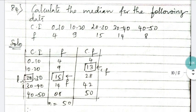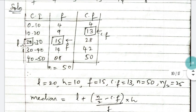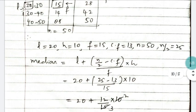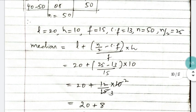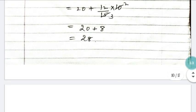Question 84: calculate the median for the given data. Write the data in a table with columns for class, f, and cf. Fill in all values, then apply the median formula: Median = L + (n/2 − cf)/f × h. Substitute all values and you get the answer as 28.